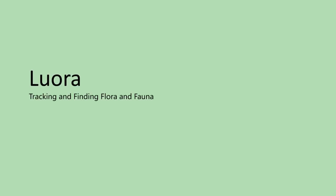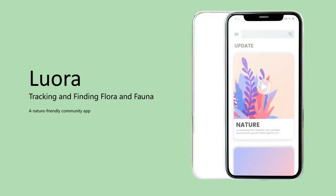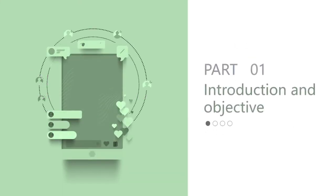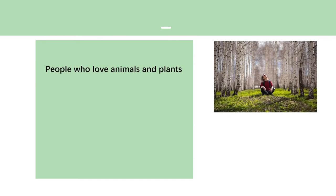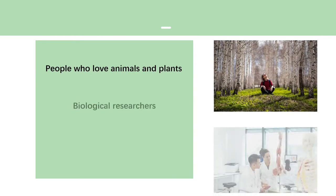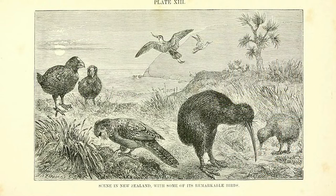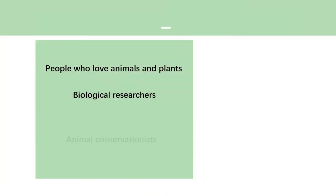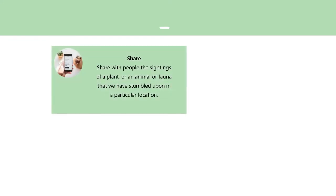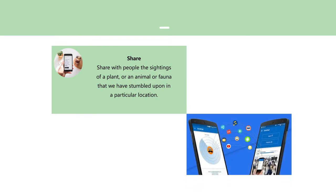Here is our app, Leora — Location Plus Core — a nature-friendly community app. Biological researchers want to observe whether a particular area is populated by a particular animal or has a particular plant growing in it. Animal conservationists and biologists can learn and protect local ecosystems and biodiversity better if they know the distribution of creatures in a particular place. We would like to have an app that allows people to share sightings of a plant, an animal, or fauna stumbled upon in a particular location.